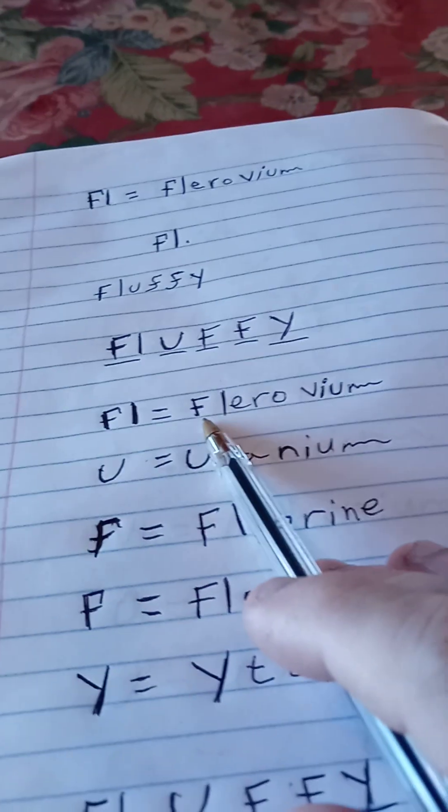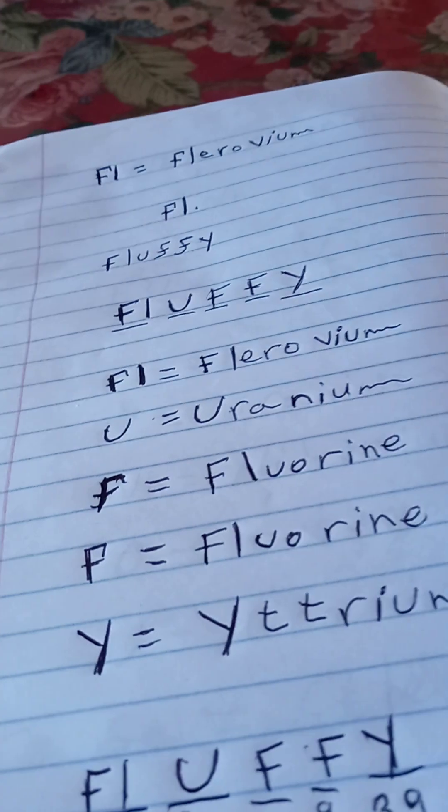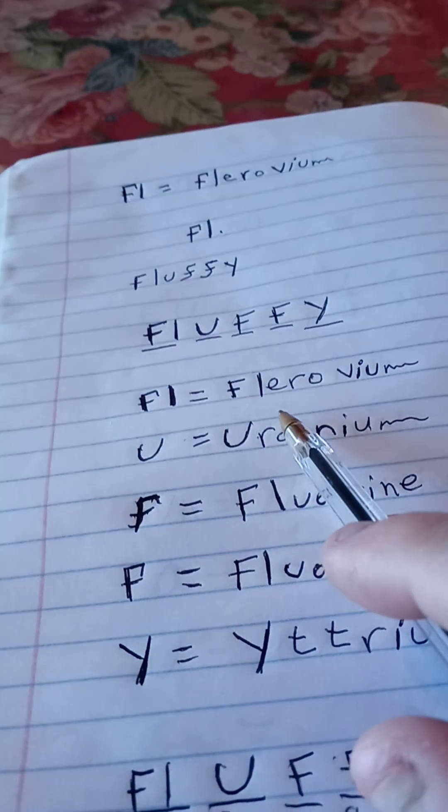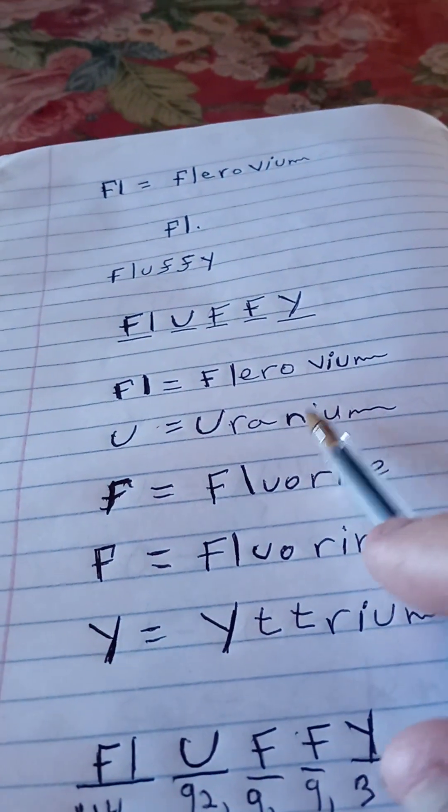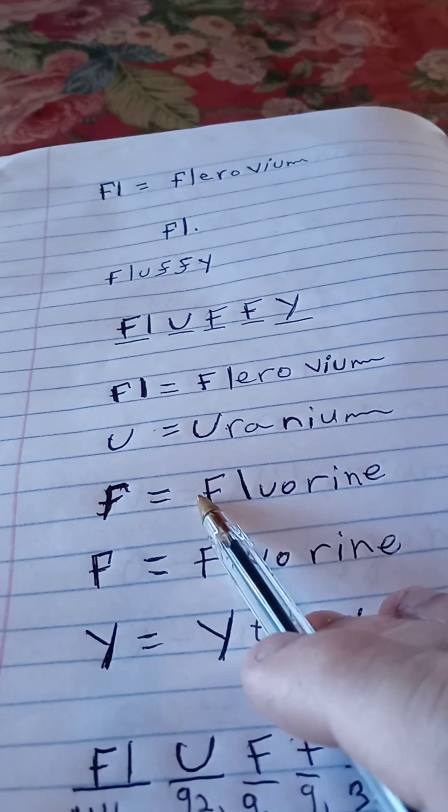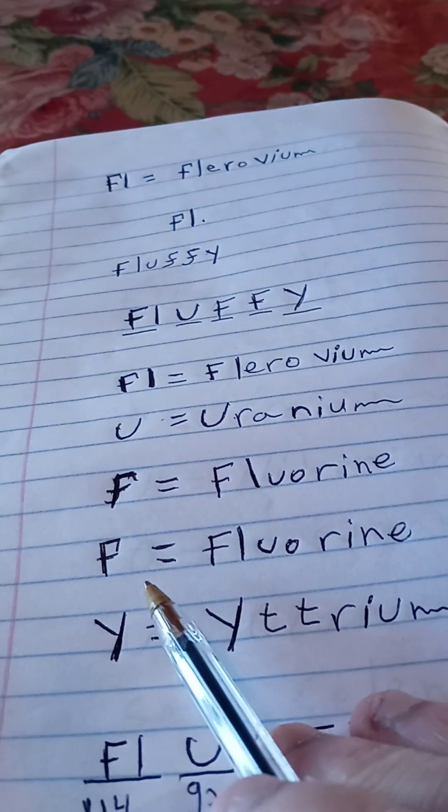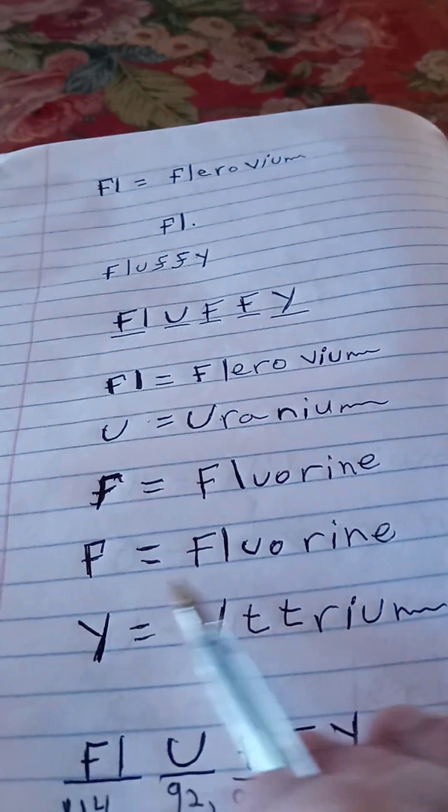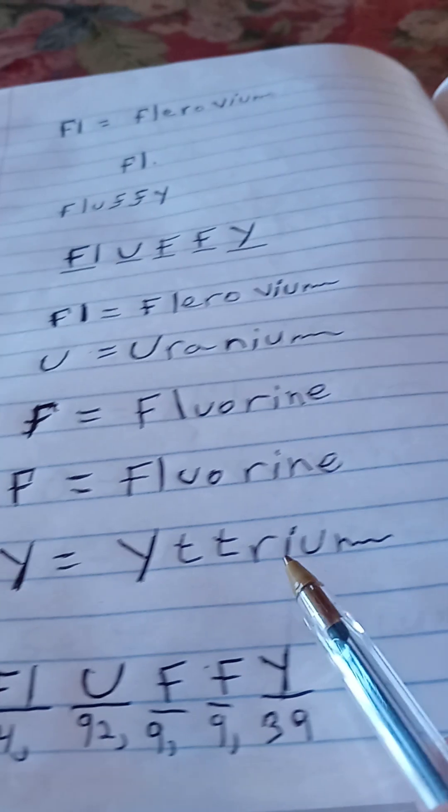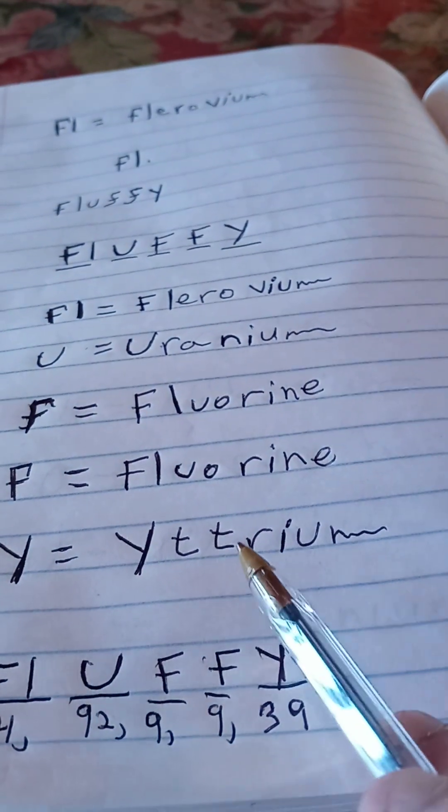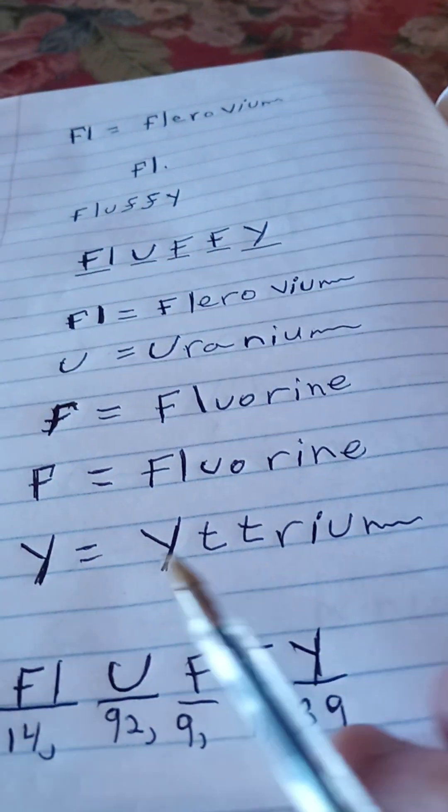Flerovium, capital F-L is the chemical symbol, and Flerovium is the element's name, capital F-L-E-R-O-V-I-U-M. Uranium, capital U-R-A-N-I-U-M. Fluorine, capital F-L-U-O-R-I-N-E. And again, we have two F's, it's Fluorine, capital F-L-U-O-R-I-N-E. And capital Y for Yttrium, capital Y-T-T-R-I-U-M.